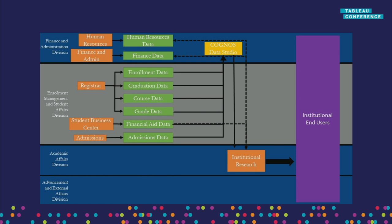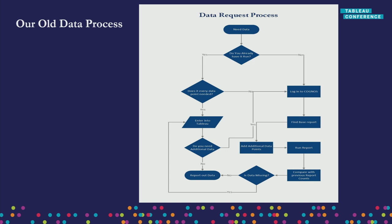Previously, human resources controlled HR data, finance administration controlled finance data — we were lucky to get some of that. The registrar and student business center, which is our consolidation of financial aid and admissions, controlled their data. They were the ones uploading into Cognos and we just pulled from there, so we were the wall between end users and all the extra data. With Jenzabar we had to run reports each time for every data request — and if we weren't careful we would lose students from the report if we added too much.